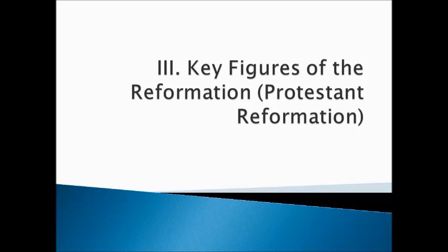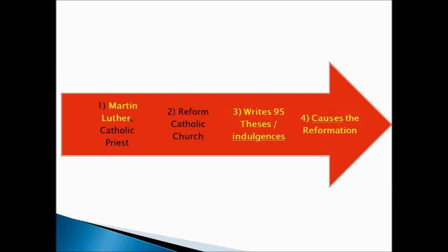What are some key figures of the Reformation? The first key figure is Martin Luther. He is a Catholic priest who wants to reform or change the Catholic Church to make it better. He writes 95 theses, or 95 complaints. Many of these complaints are about indulgences — the documents that would allow someone to be forgiven of their sins and have an easier time getting into heaven. These 95 theses end up causing the Reformation, so Martin Luther is given credit for causing this large movement.